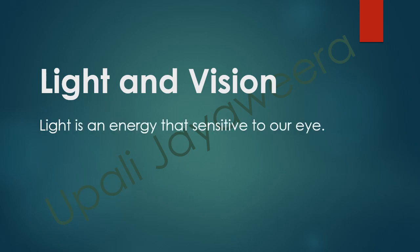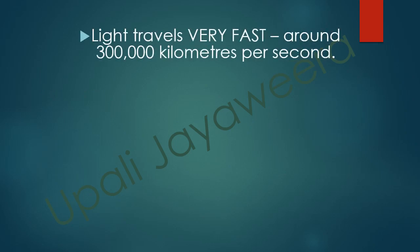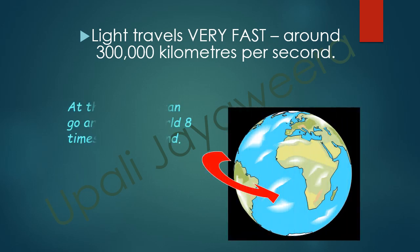Light is an energy that's sensitive to our eye. Light travels very fast, around 300,000 km per second. At this speed, it can go around the world 8 times in 1 second.